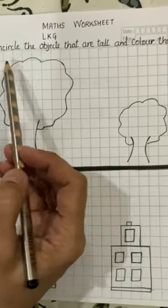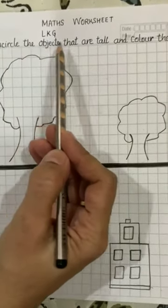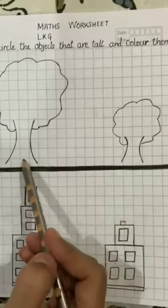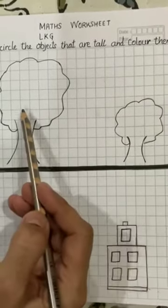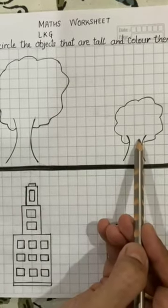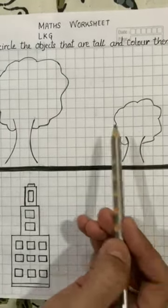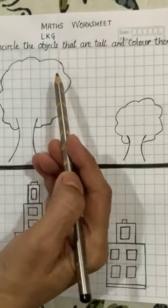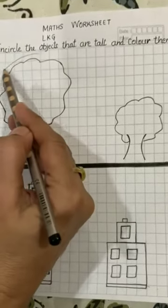First, we will read the heading and circle the objects that are tall and color them. Look children, here are two trees. One tree is tall and another tree is short, and we have to encircle the tall one. So first we will encircle this tree.